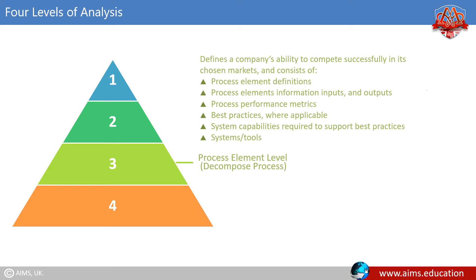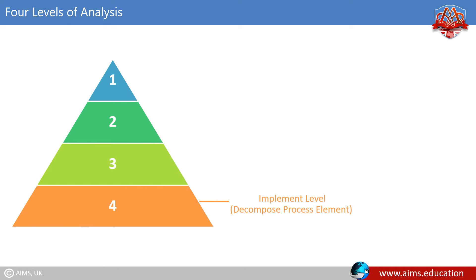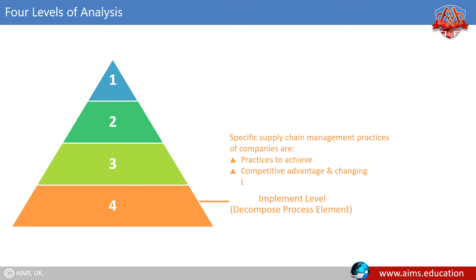At level three, the company learns about the information inputs needed for each process element and the outputs to expect. At level four, specific supply chain management practices are implemented. This level defines practices to achieve competitive advantage and how to adapt to changing business conditions.